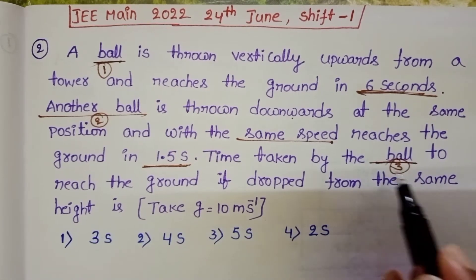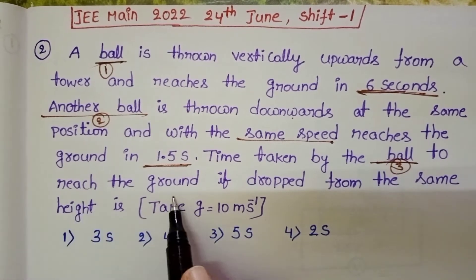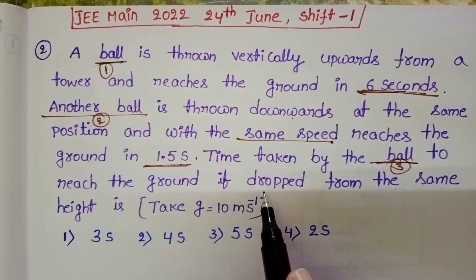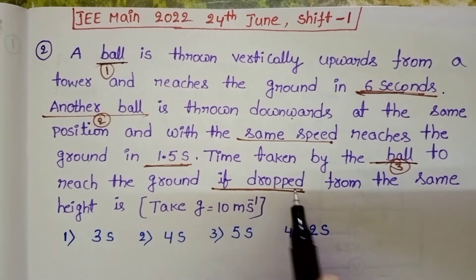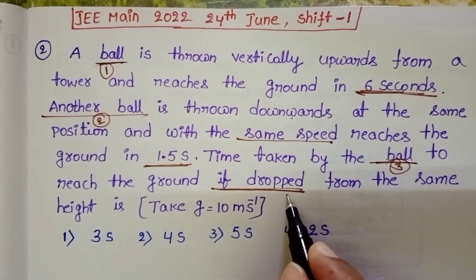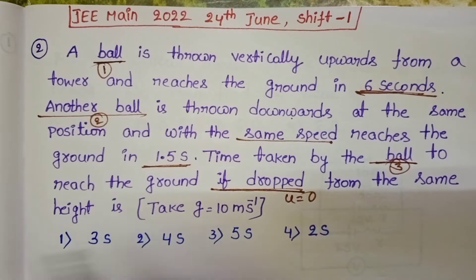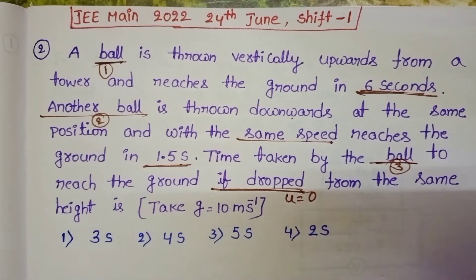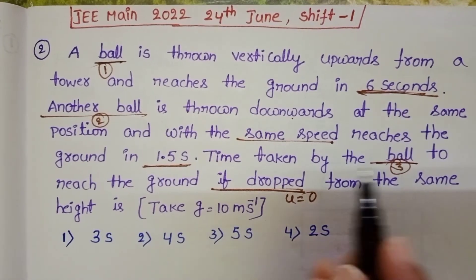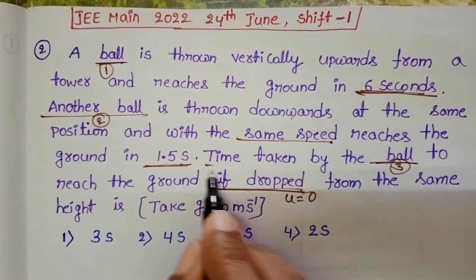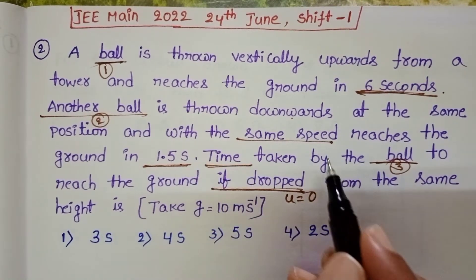The third ball is dropped from the same height — dropping means initial velocity is zero. We have to find the time taken by the third ball to reach the ground.